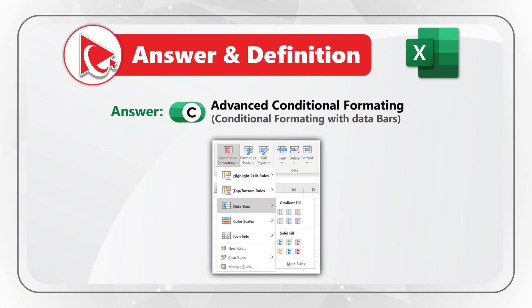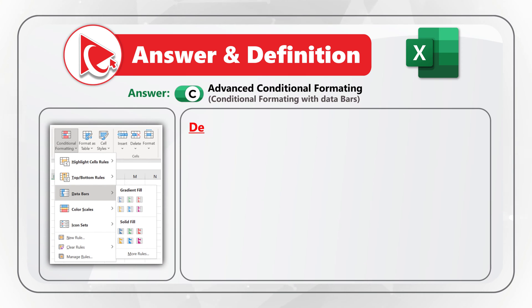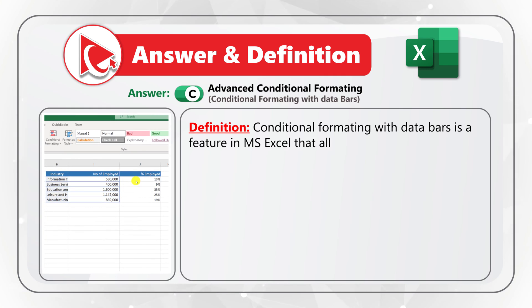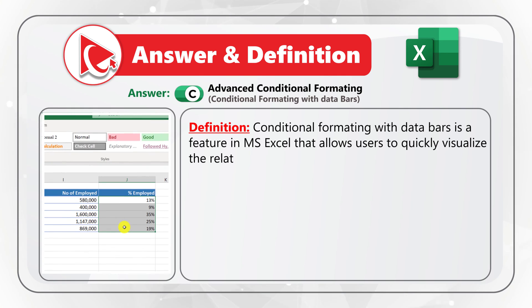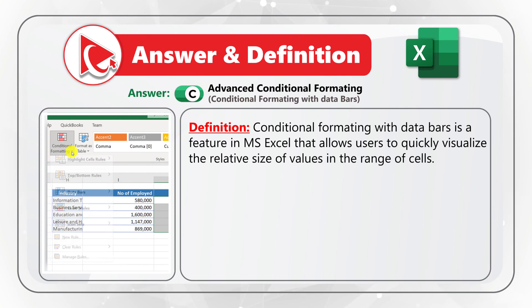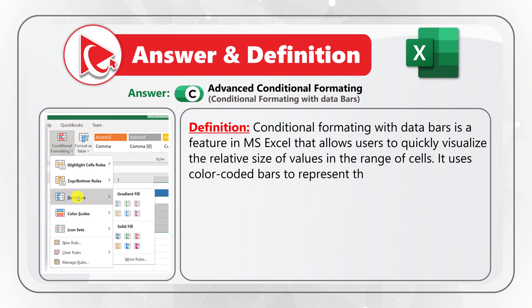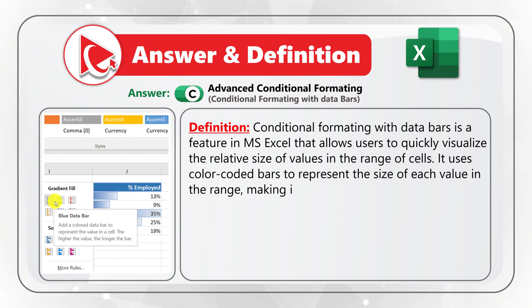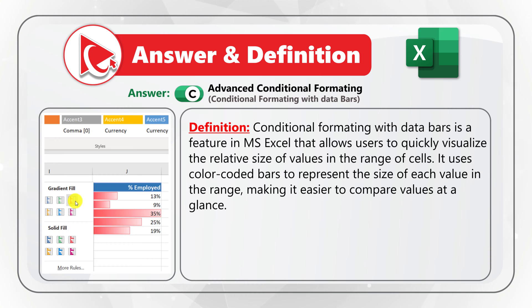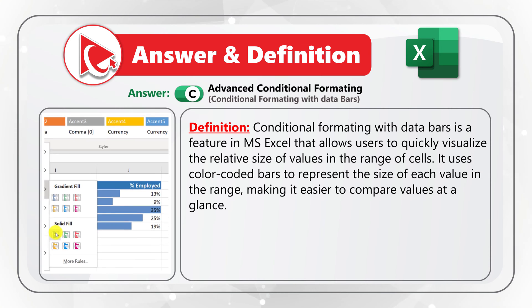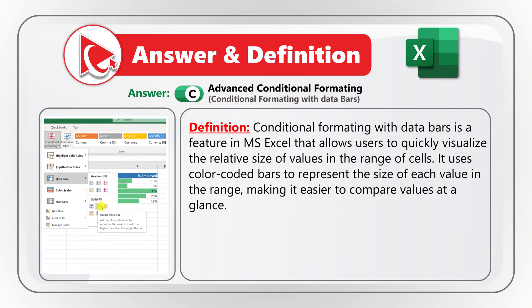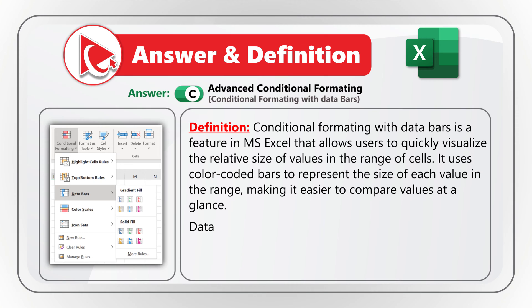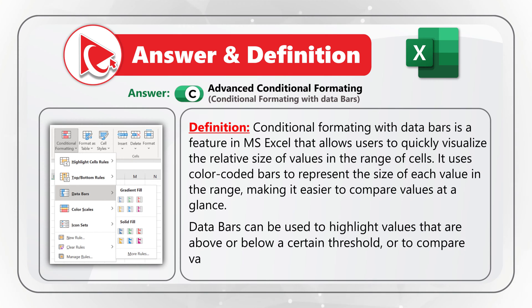Conditional formatting with data bars is a feature in Microsoft Excel that allows users to quickly visualize the relative size of values in a range of cells. It uses color-coded bars to represent the relative size of each value, making it easier to compare values at a glance. Data bars can be used to highlight values above or below a certain threshold, or to compare values across different categories.